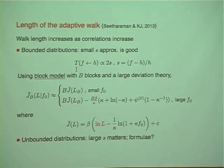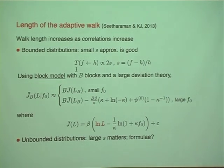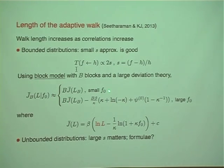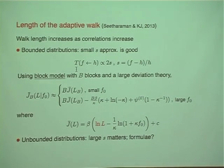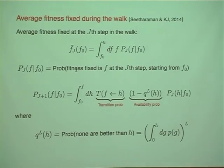Regarding fitness correlations: if the fitness landscape is correlated it becomes smoother, meaning fewer local peaks, which means the population can go farther. So walk length increases as correlations increase, as expected. For correlated fitnesses we can obtain some analytical solutions for bounded distributions, but not yet for unbounded distributions. To summarize walk length: walks are short and change logarithmically with sequence length, and they have weak dependence on the fitness distribution.